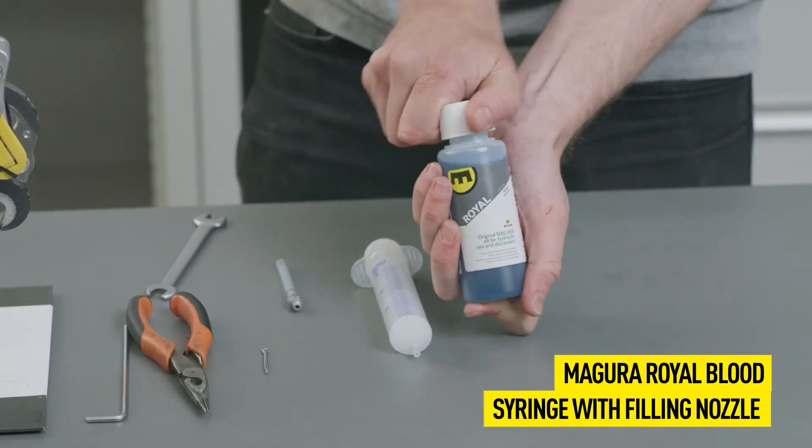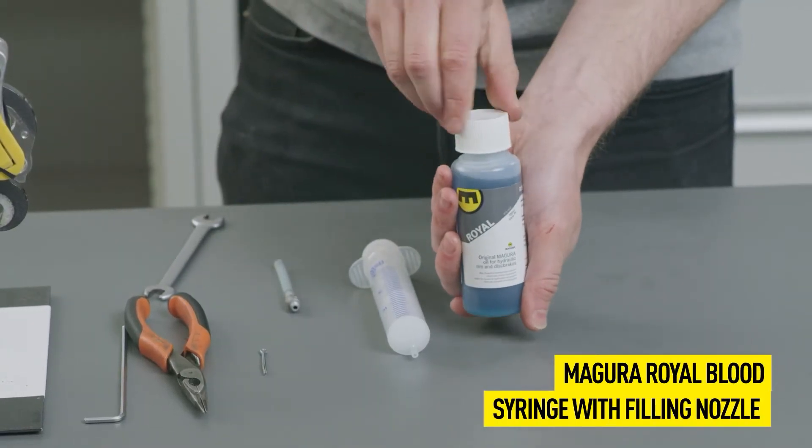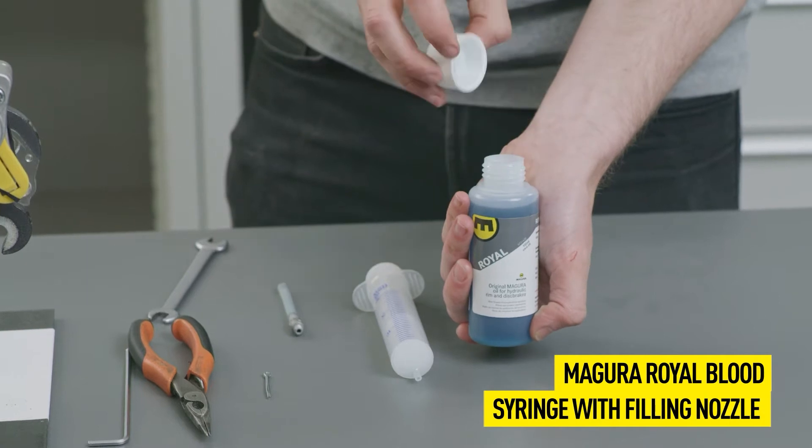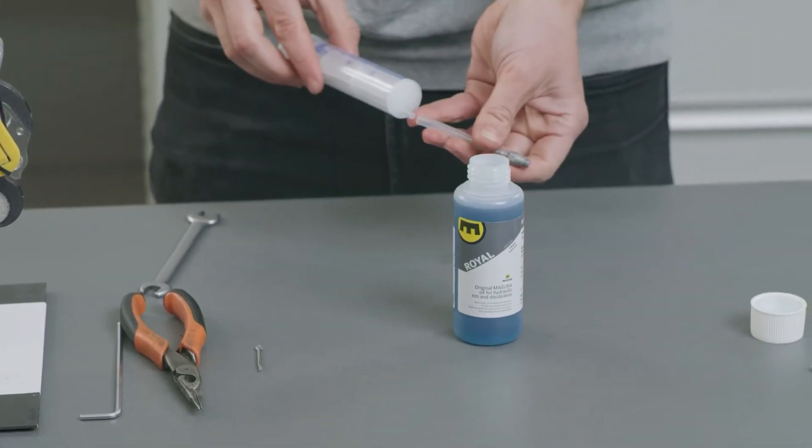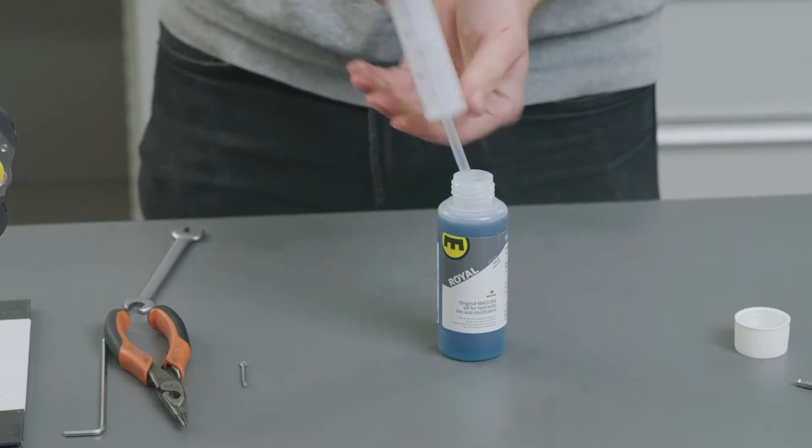For filling and bleeding twin systems, you will need three syringes. Fill the two syringes with filling nozzles with Magura Royal Blood mineral oil.